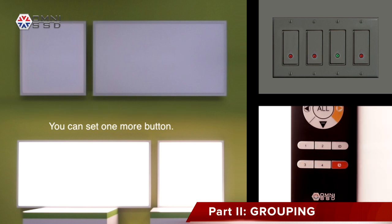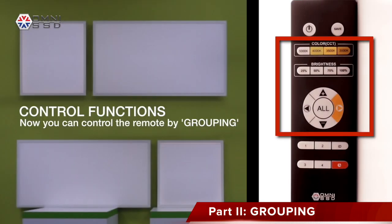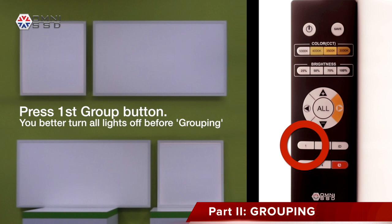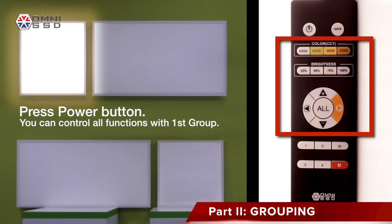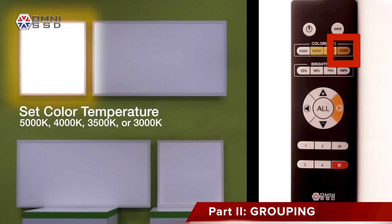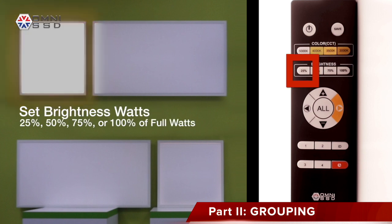Now that we have programmed all the groups, let's control the functions like color and brightness settings with the buttons that you're familiar with. Press one of the four group buttons — in this case, let's press one. Press your power button and you can access all functions for the first group: color or brightness changing, going from 3,000K to 5,000K. You can set the brightness from 25% to 100%, which is full wattage.